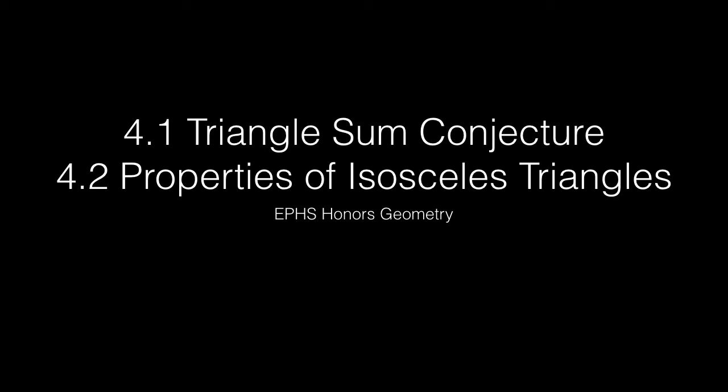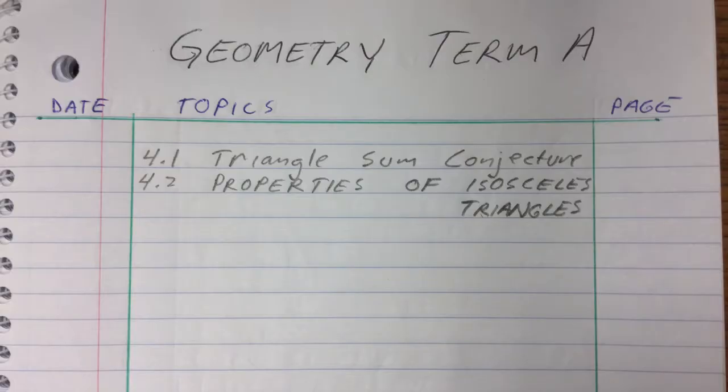Section 4.1 is the triangle sum conjecture and 4.2 are properties of isosceles triangles. Please put this into your table of contents and then we'll get going.